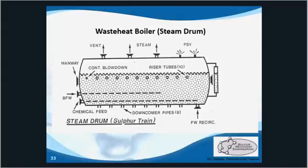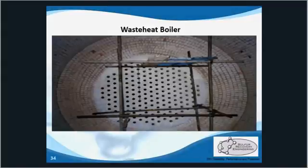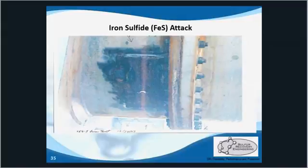This is where the bulk of heat removal takes place — it can be as high as 1000 degrees centigrade removed, typically taking gas from around 1150 down to 300 Celsius, leading to high pressure steam production anywhere from 150 to 400 psi. Photos show the tube sheet with refractory bricks inside and inspection scaffolding. Another picture shows iron sulfide attack where the refractory must have failed, resulting in damage from the high temperature and acidic environment.